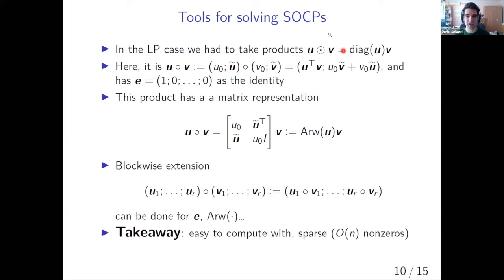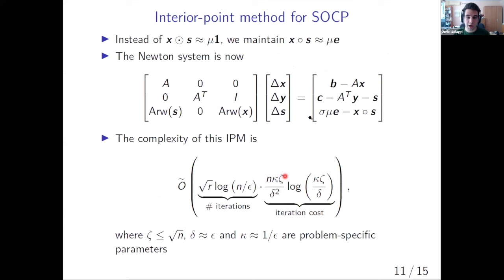Just like in the LP case, we were taking some element wise products. This element wise product is replaced by something called the Jordan product. The exact expression is not really important. The important fact is that we can actually express it as a matrix vector multiplication. And this matrix corresponds to our vector. So you can think about these arrow matrices as the analogs of the diagonal matrices. The main thing is that they are sparse and they also have often non zero entries in them. The main takeaway is that these arrow matrices and second order cones are easy to compute with, or at least are not too much harder than in the case of LPs.